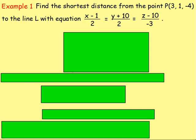Example 1: find the shortest distance from the point P (3, 1, −4) to line L with equation (x − 1)/2 = (y + 10)/2 = (z − 10)/(−3).